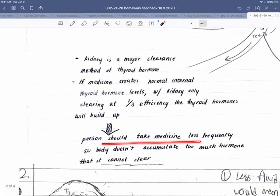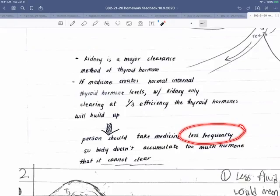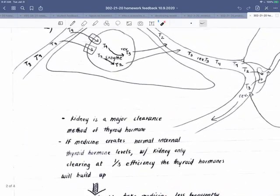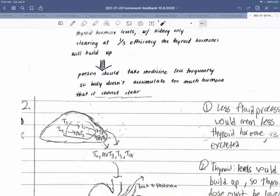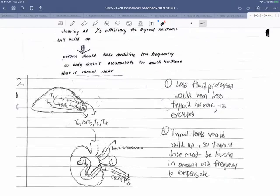The person should take their medication less frequently, so the body doesn't accumulate. Of course that's hard to assess how much kidney reduction there is, and then how much of the clearance is happening in the liver versus the kidney. So that higher dose may not be safe, but it wouldn't necessarily be easy to predict what kind of a change to make.